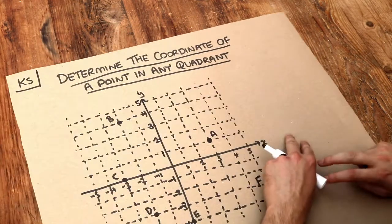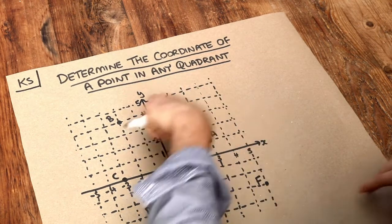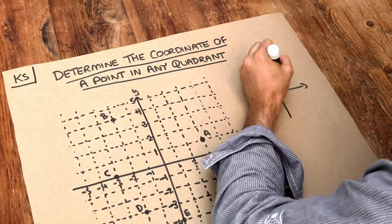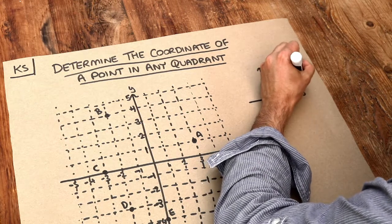We only explored coordinates in the previous video where both the x value and the y value were positive, so in this region here. And this region here is known as the first quadrant, where the x and y values are positive.